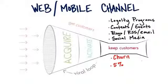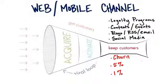But imagine if you could reduce churn to 1%, so that every month only 1% of these customers left. After 36 months with 1% attrition, you'd have 70% of your customers left.